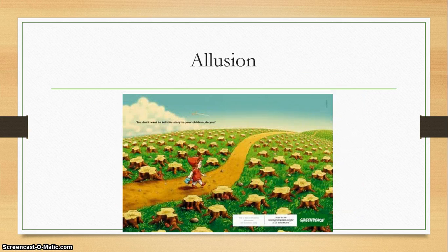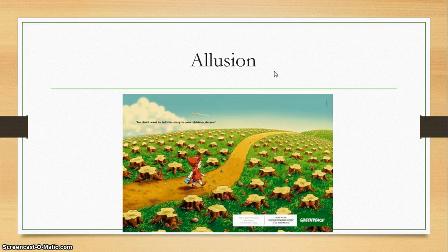Another thing that might happen is an allusion — you'll see how it's spelled here. That basically means a reference to a story, a movie, a historical event. We have a lot of allusions from the Bible or from mythology.